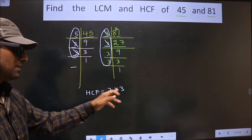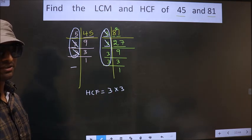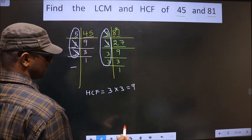Therefore, you multiply these numbers. Whatever number you get, that is your HCF. That is 3 times 3 equals 9. So 9 is our HCF.